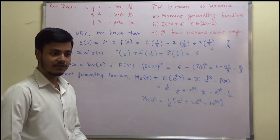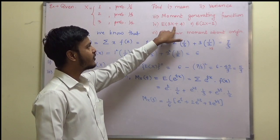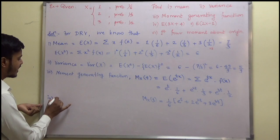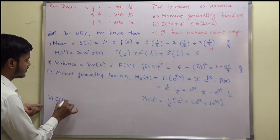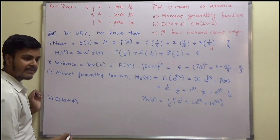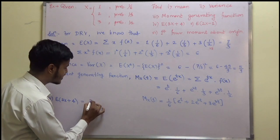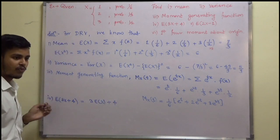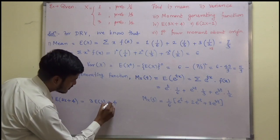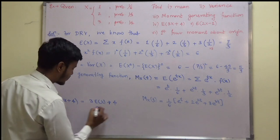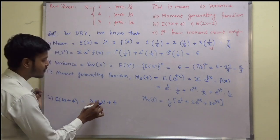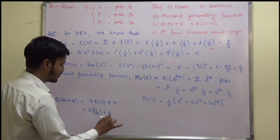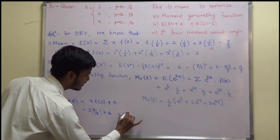Next we have to find E(3X+4). That is very easy. This can be done as 3 times E(X) plus 4 times E(1) = 3 × (7/3) + 4 = 7 + 4 = 11. So E(3X+4) comes out to be 11.